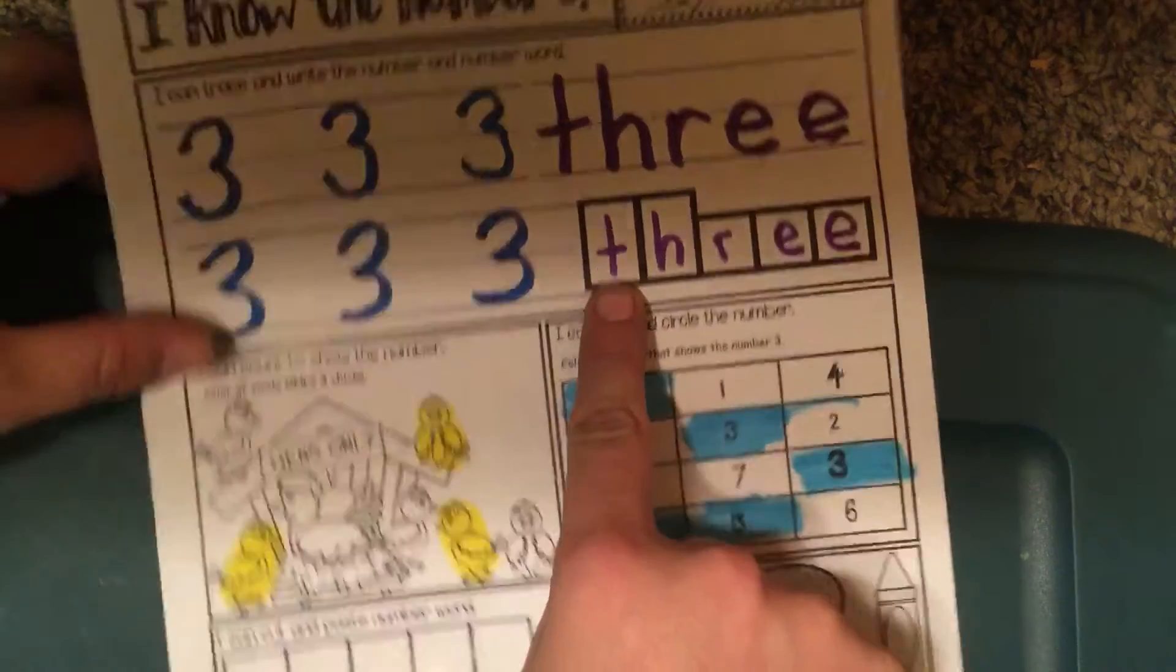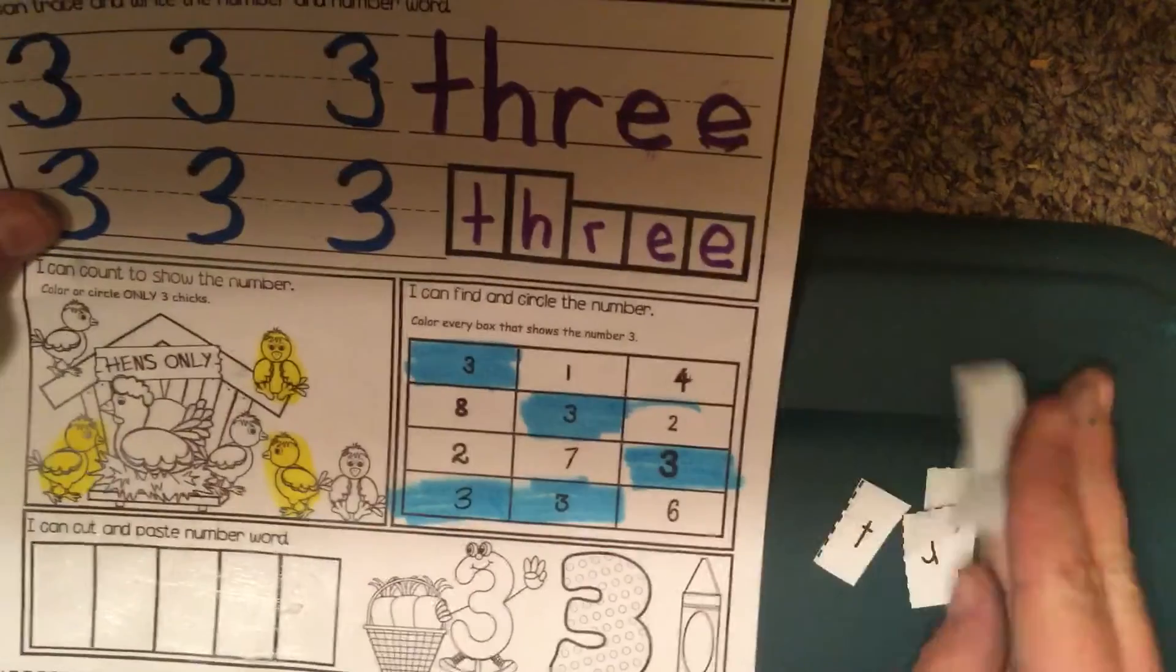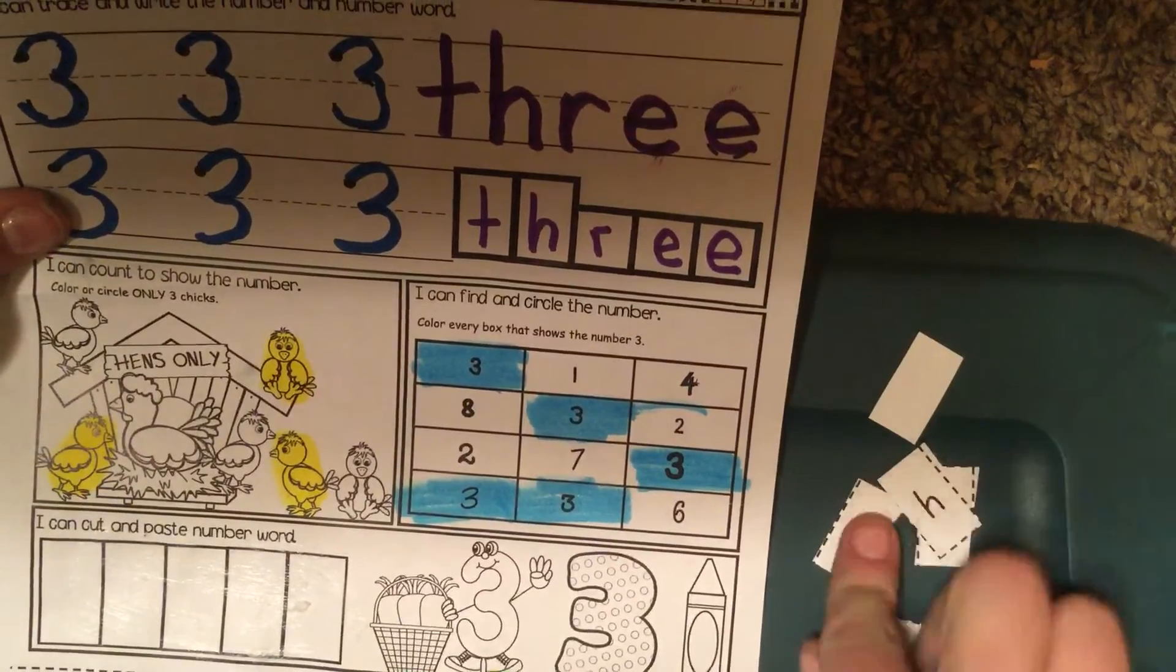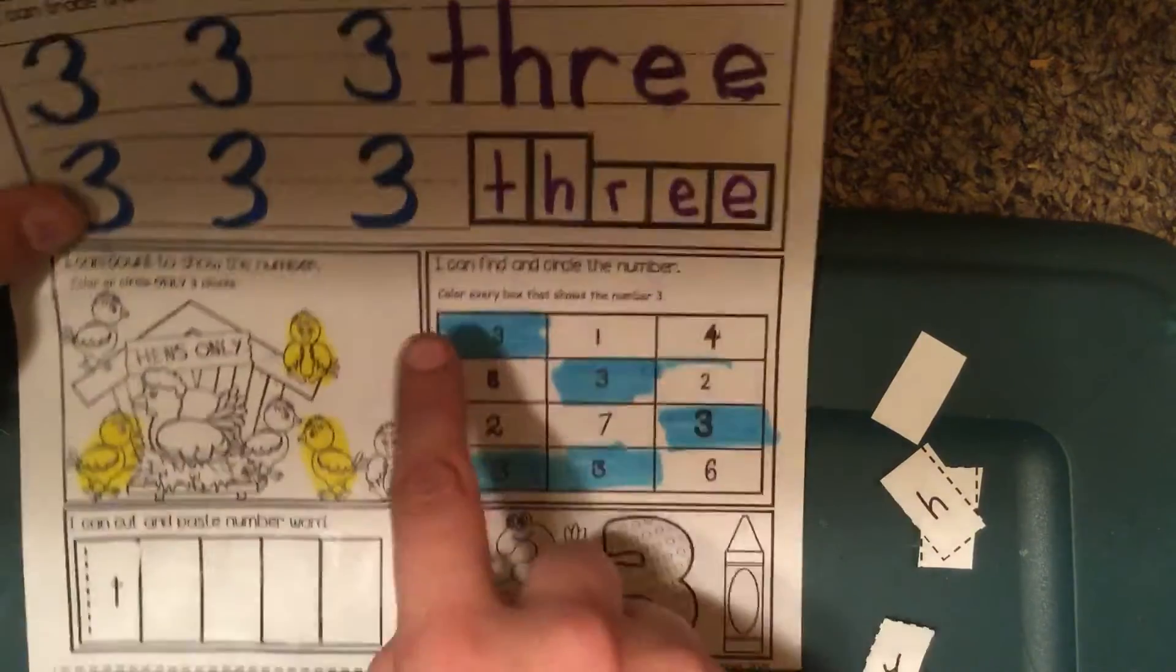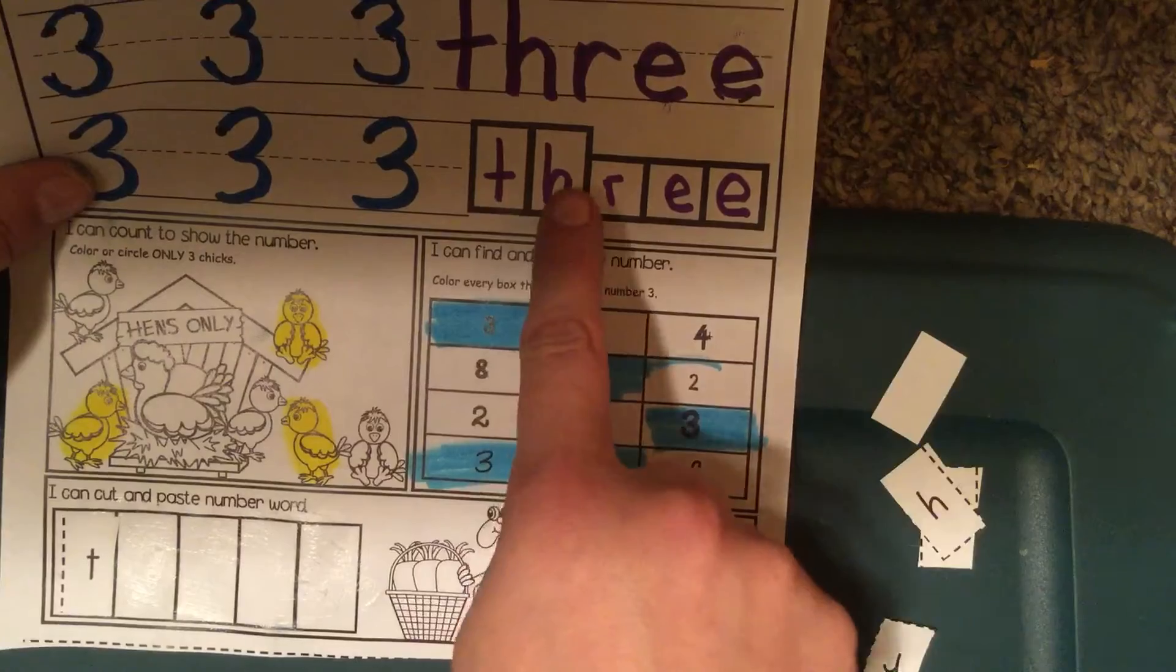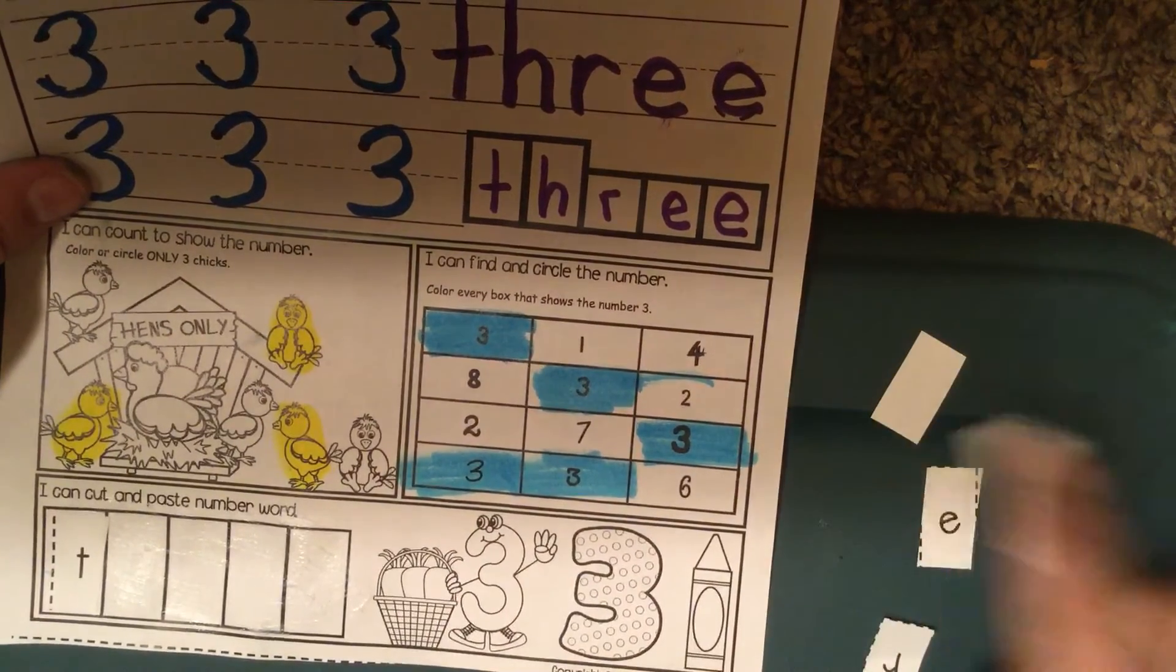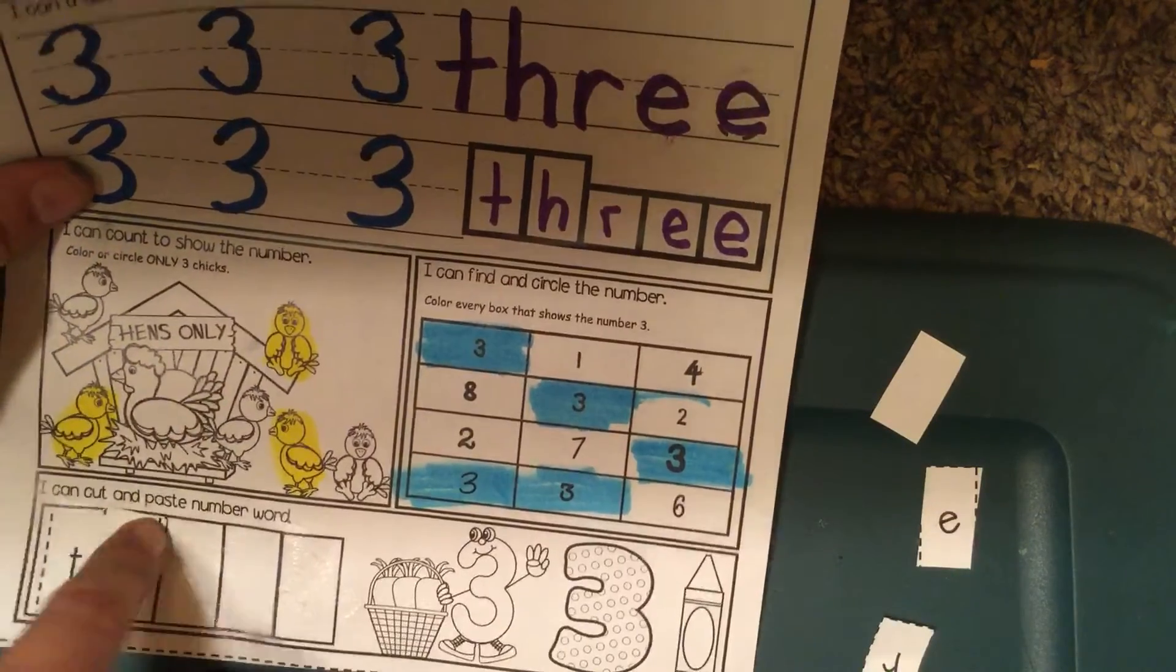Then I'm going to look and build the number word three. So if I look, the first letter is a T. So I'm going to look for my letters here. Here's T. T goes on the first one. Then I'm going to look at the next one. H. Find the letter H. Glue that on the next spot.